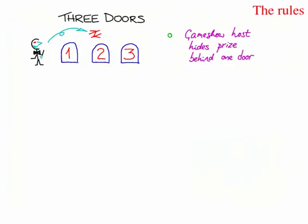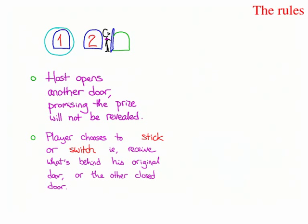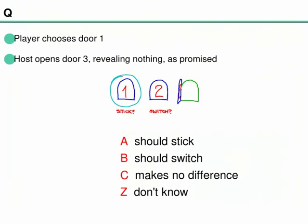The rules of the three doors problem are that the game show host hides the prize behind one of three doors at random. The player chooses one door — for example, door one, shown by the blue circle. The host then promises to open another door without revealing the prize, and the player is then given the chance to stick or switch. If they switch, they get what's behind the other closed door, which in this case would be door two.